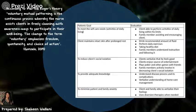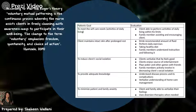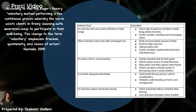The second goal is the client maintains intact skin with prolonged rest. The evaluation would be the client drinking a recommended amount of fluid, performing daily exercises, taking a healthy diet, and family members understanding instruction and following it. The third goal is to reduce the client's isolation. The evaluation would be the client verbalizing that he feels good, enjoys forms of entertainment, can play poker and other games with friends, and family members actively involved in decreasing the client's social isolation. The fourth goal is to provide adequate knowledge. The evaluation would be understanding the disease process and its complications, and verbalizing understanding of home care management.